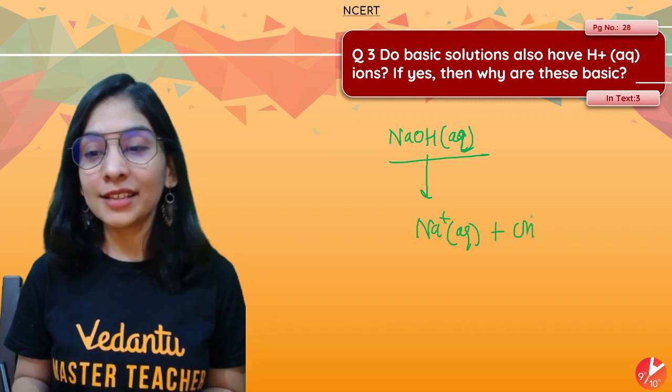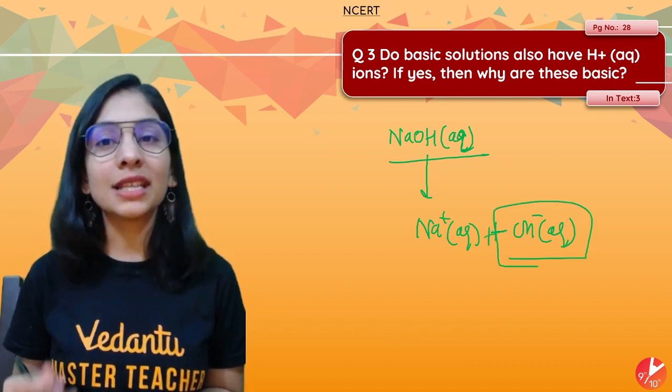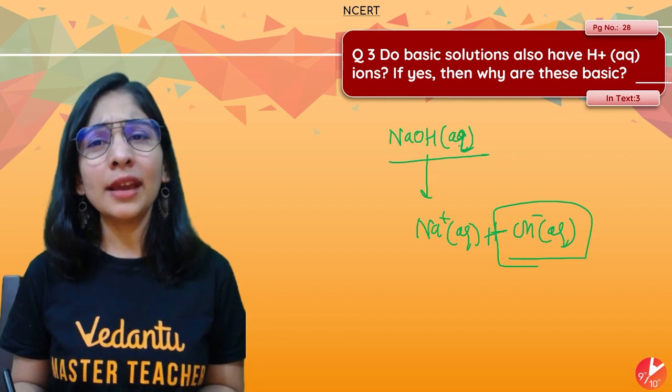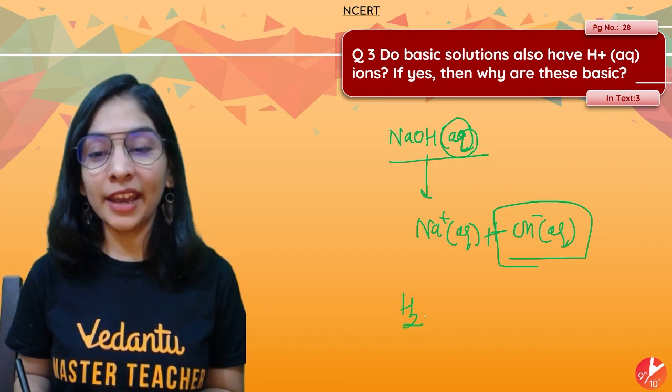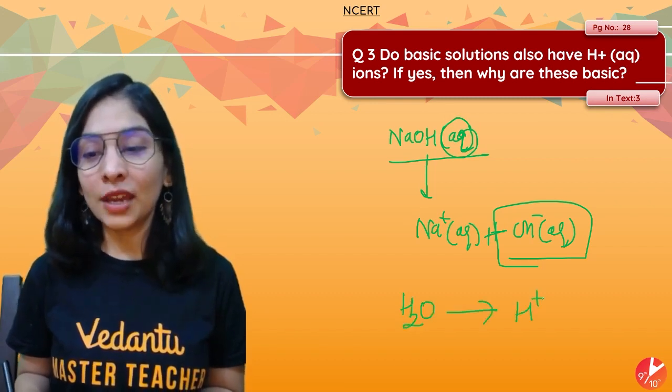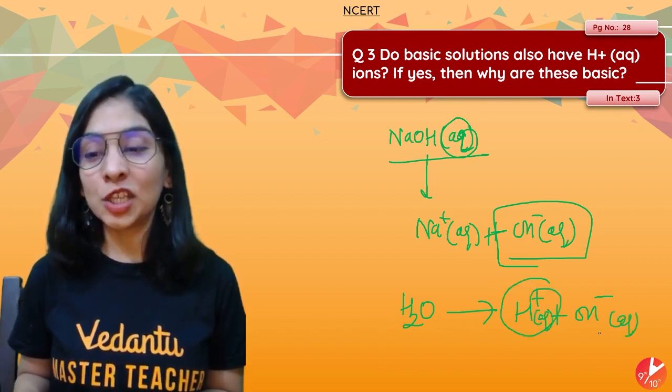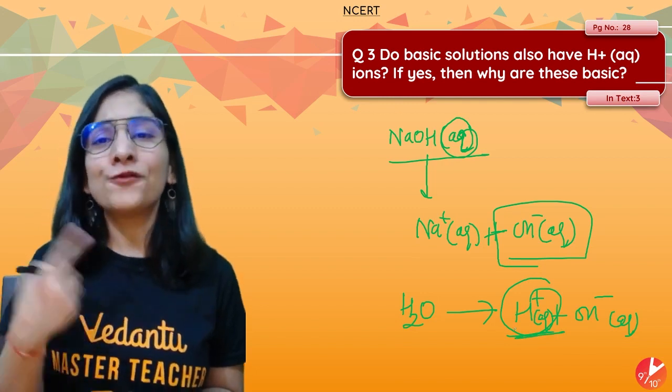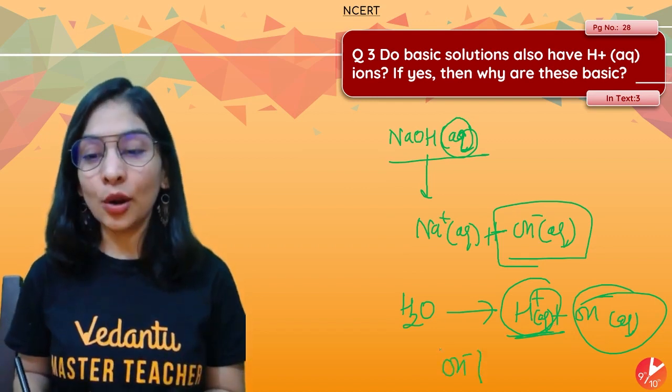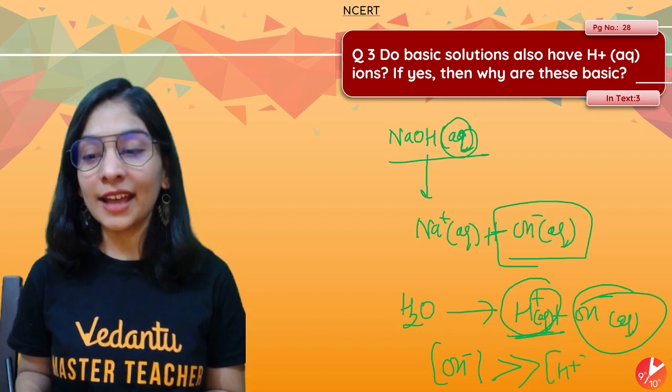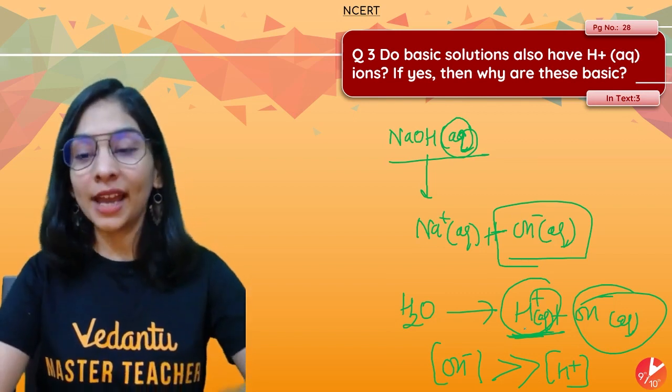If I take a base and put it in water, then it will dissociate and give us ions. When you dissociate a base, you know that OH- ions will make the substance carry basic behavior. But are there H+ ions or hydronium ions in this? Absolutely yes, because if it's aqueous, meaning water is also present, and water also dissociates to give H+ ions and OH- ions. So hydronium ions are possible, H+ ions are possible even in a base.